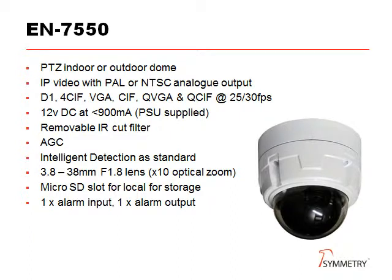The EN 7550 is a PTZ camera suitable for indoor or outdoor use. It has an analog output and the same range of resolutions as the other cameras. A power supply is provided, because this camera is not compatible with PoE due to the current consumption. Day-night operation and automatic gain control are standard, and the lens has a zoom range of times 10. Although the EN 7550 has intelligent detection as standard, analytics are not yet available until they can be linked to a preset position, to avoid false alarms.